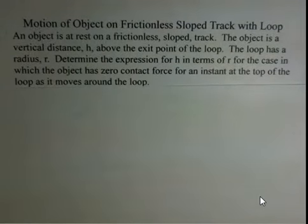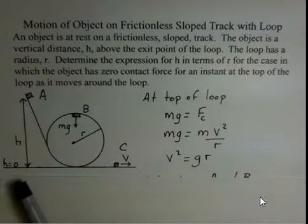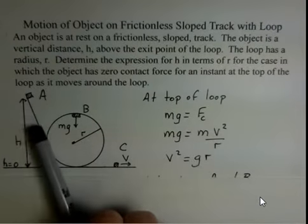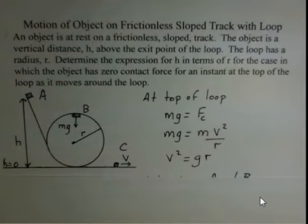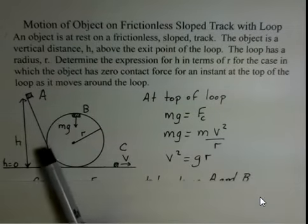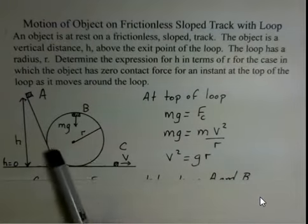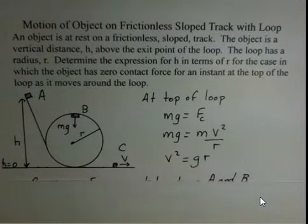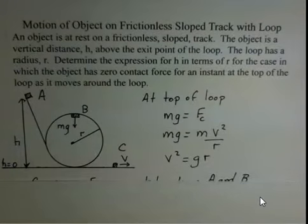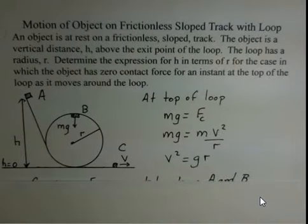So a picture might help you think of the problem here. We have ground level where h equals zero. Object on the slope track, no friction so it doesn't matter the angle of the slope here. But we come down, we enter the loop, we go around the loop and then we exit out here to point C. And at the very top there's no contact force between the track and the object.